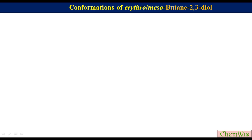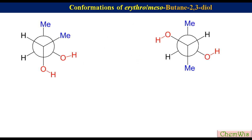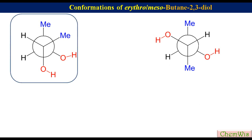Let's first discuss the conformations of erythro-butane-2,3-diol. These are the two stable conformations, or conformers, of erythro-butane-2,3-diol. In this conformation, the two methyl groups have a gauche relation with each other, and the same is the case with the two hydroxyl groups.